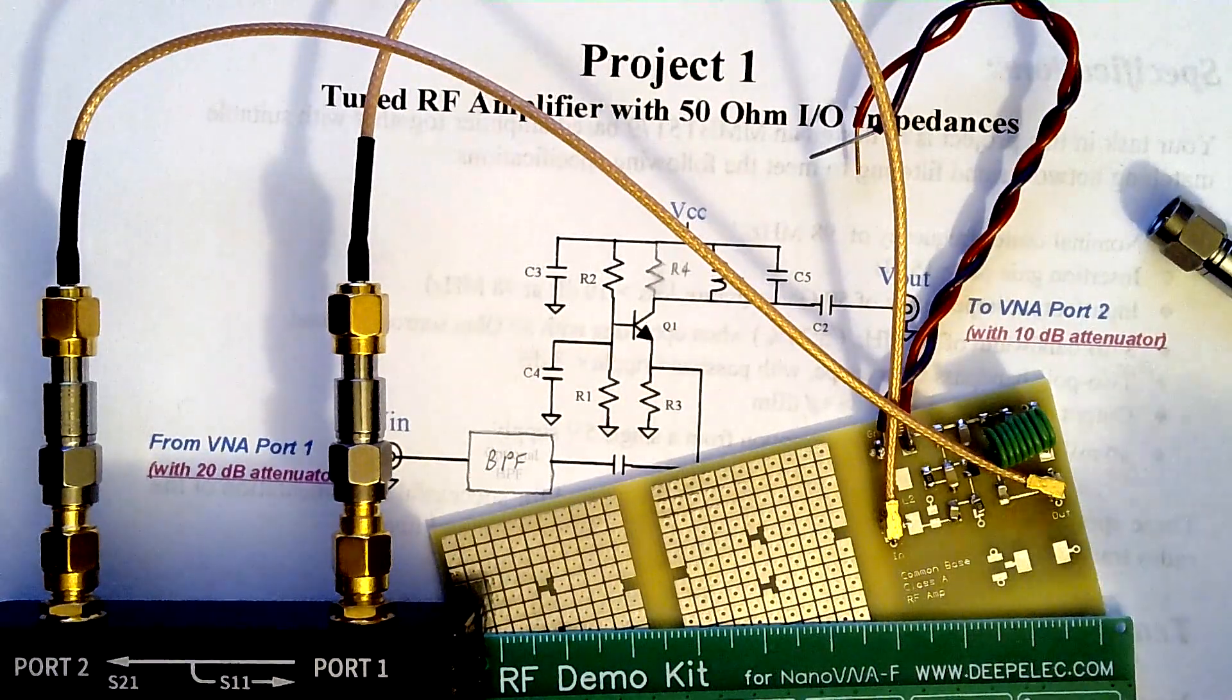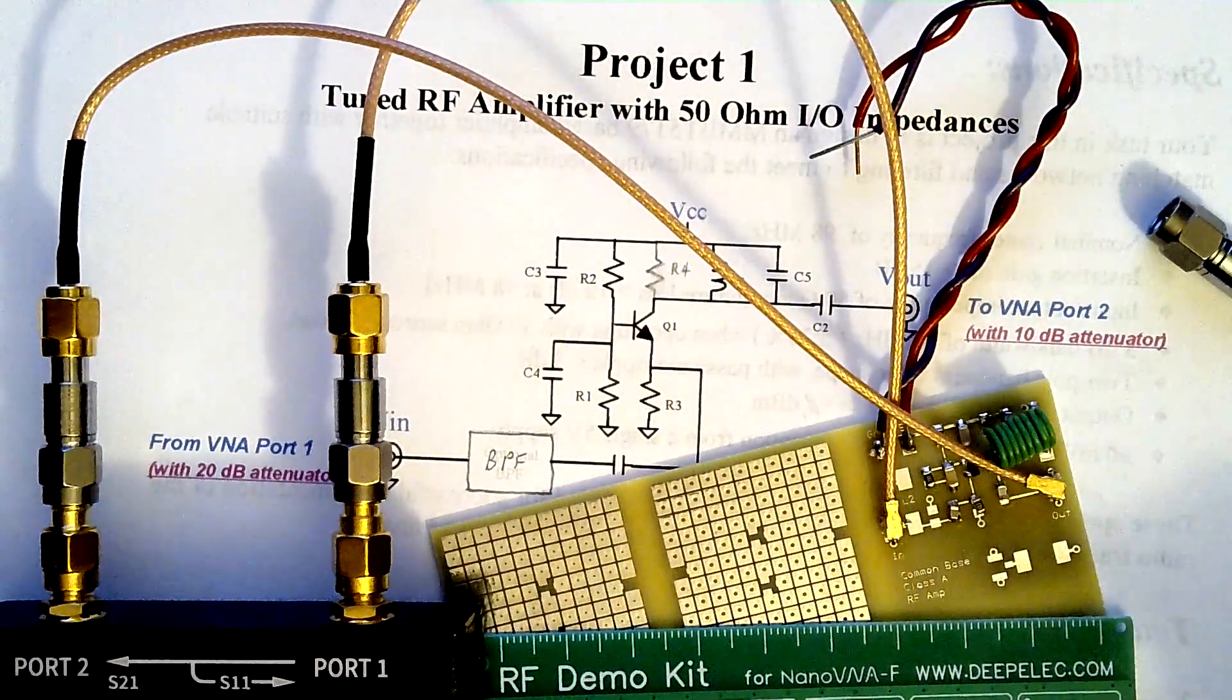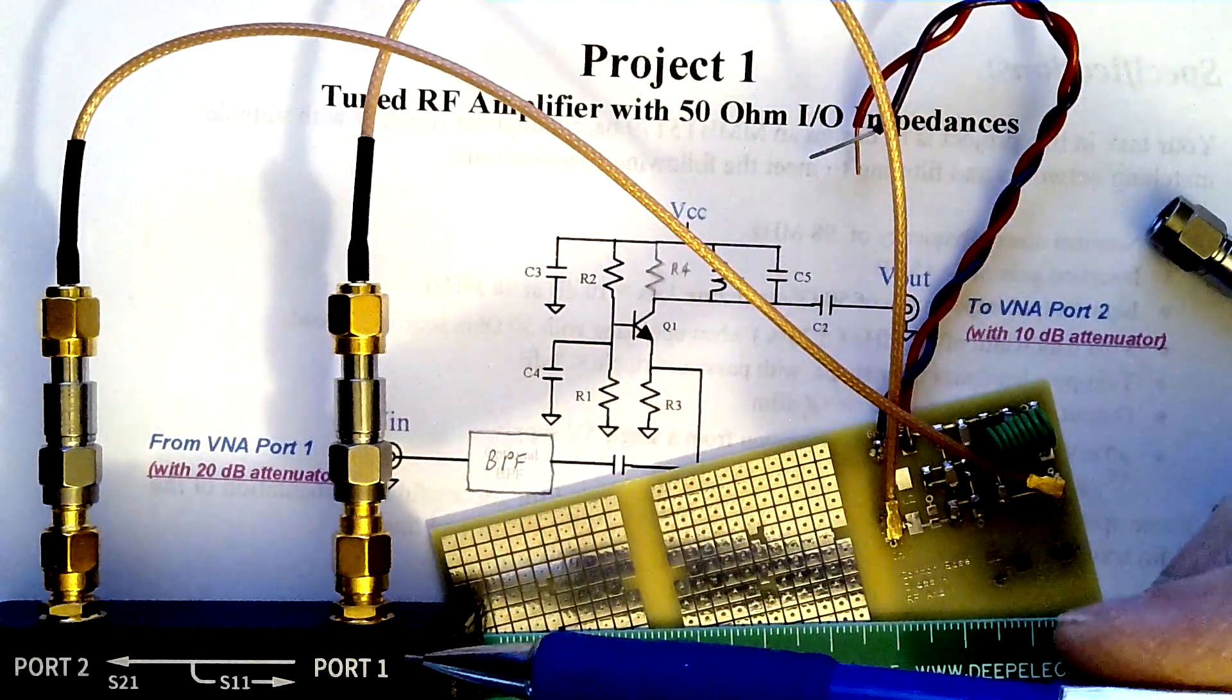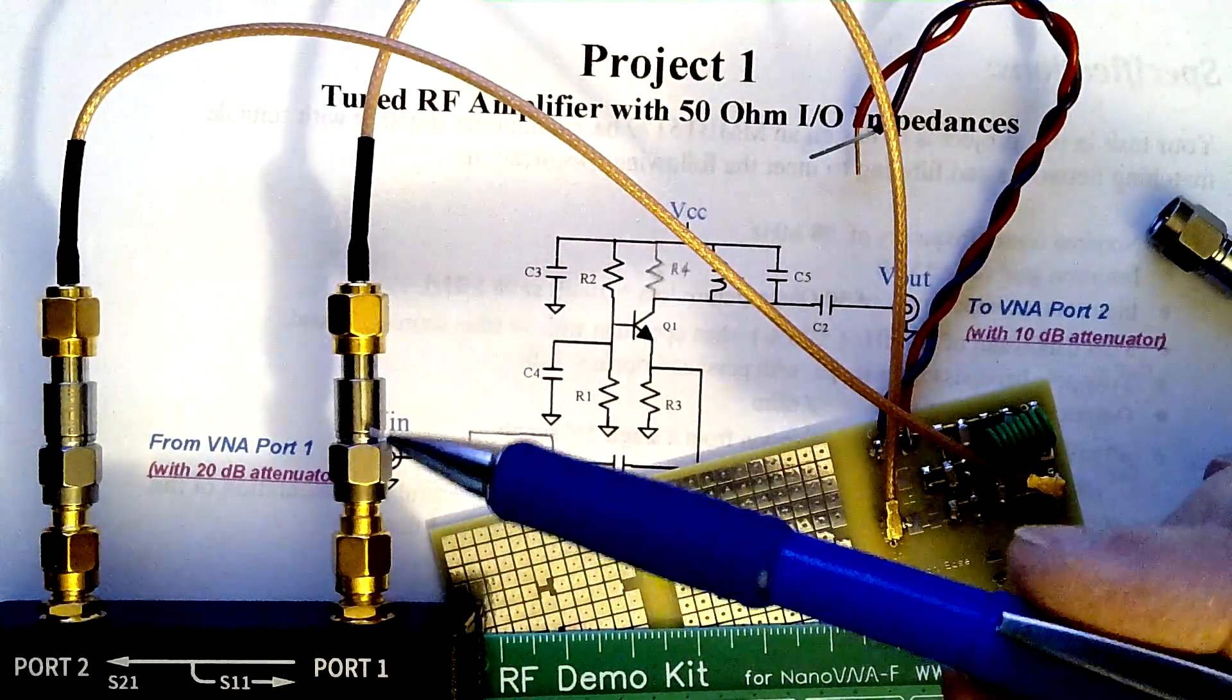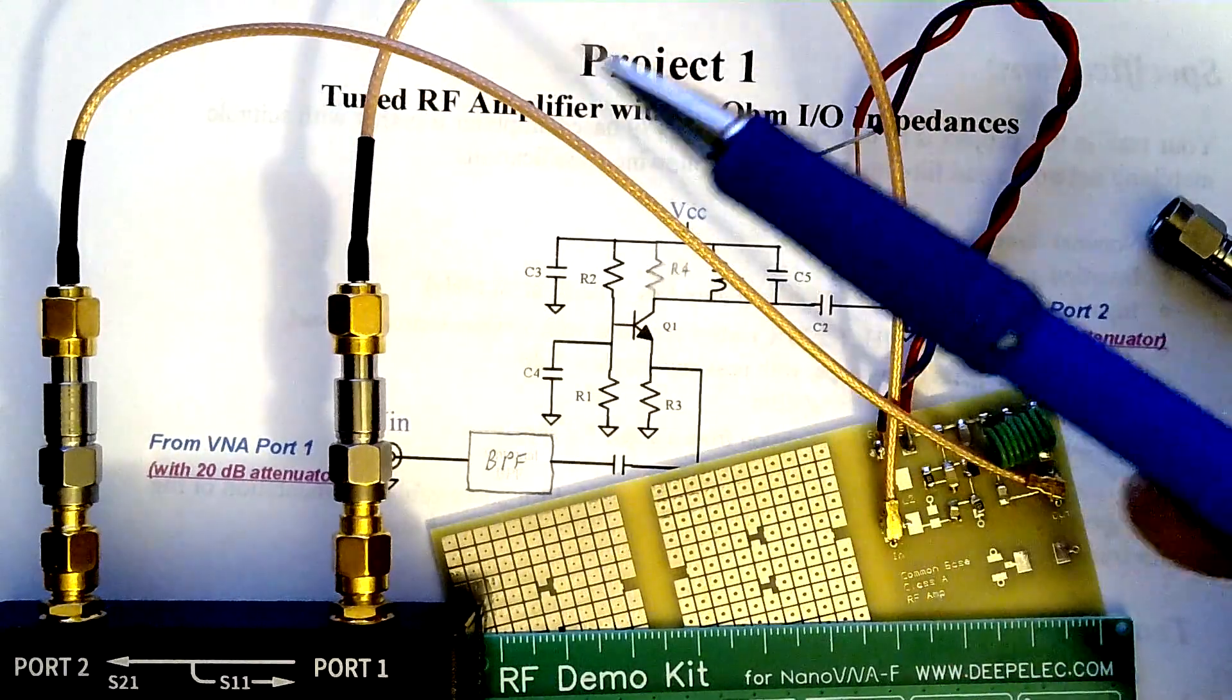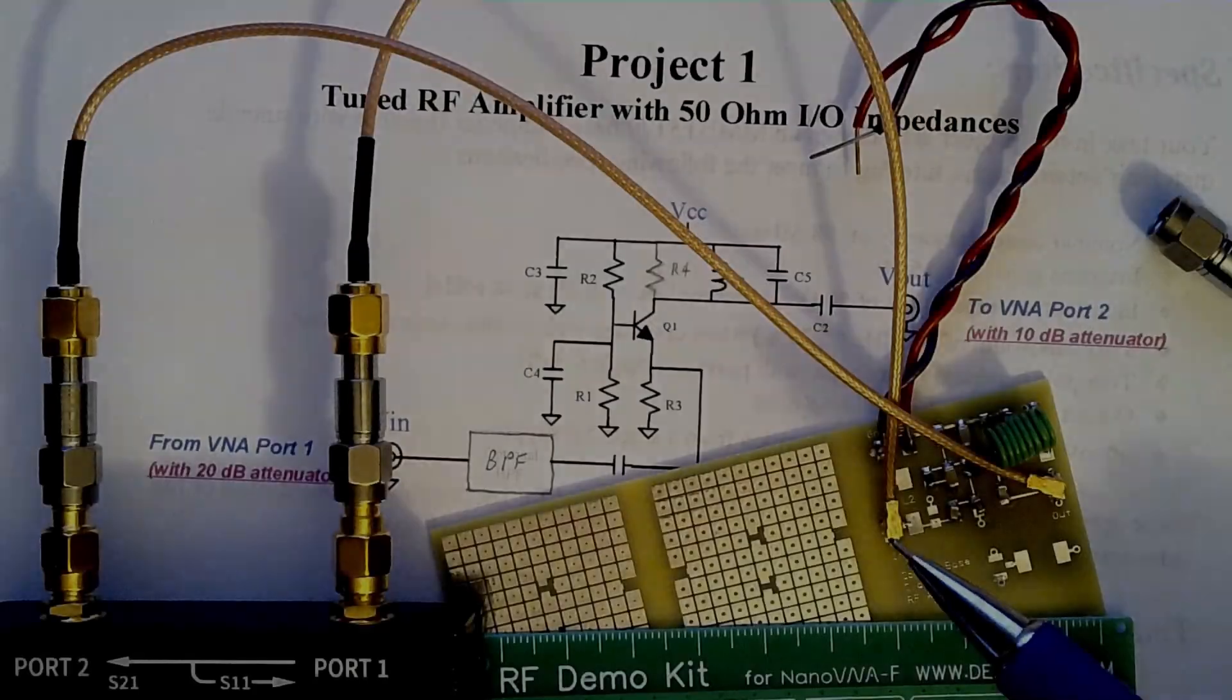And for measuring amplifiers, attenuators are absolutely necessary because the amplifier makes the signal larger. The signal coming out of port 1, as we've shown in a previous video, is about zero to plus 2 dBm in the lower frequency range. And if you feed that into an amplifier input, you can overdrive that input.